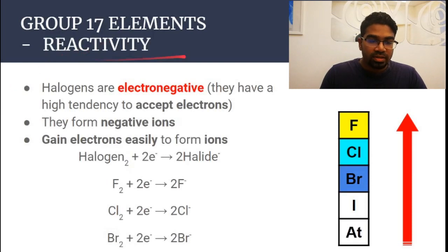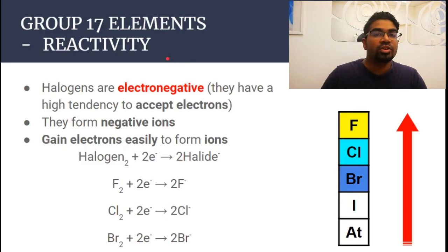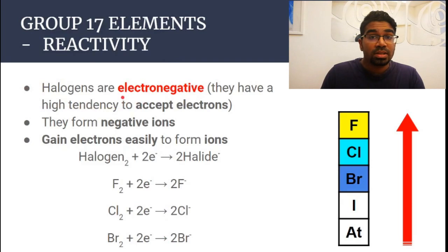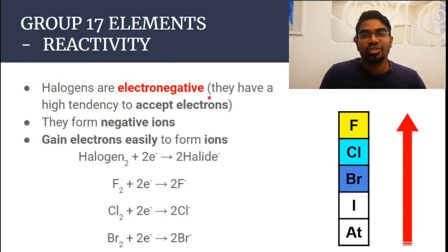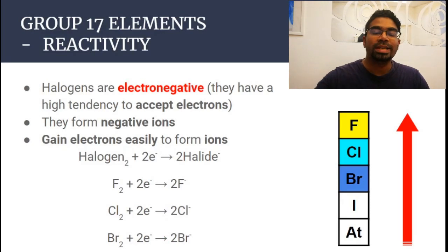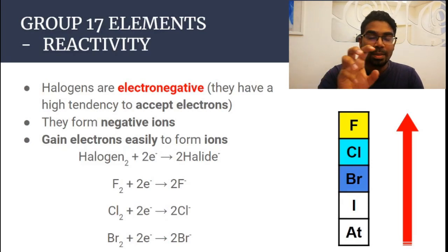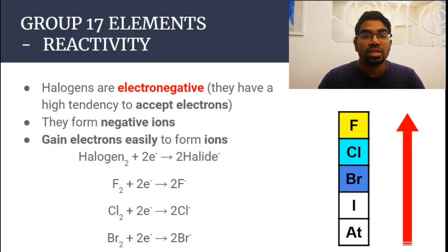Looking at group 17 elements' reactivity — how does it vary down the group? Reactivity here means the ability to react with other elements. Halogens are electronegative. Group 1 elements are electropositive, meaning they have a tendency to donate electrons — they become positive by donating electrons. Electronegativity is the opposite: it is the tendency to gain electrons, the ability to become negative, and the only way to become negative is by gaining electrons.